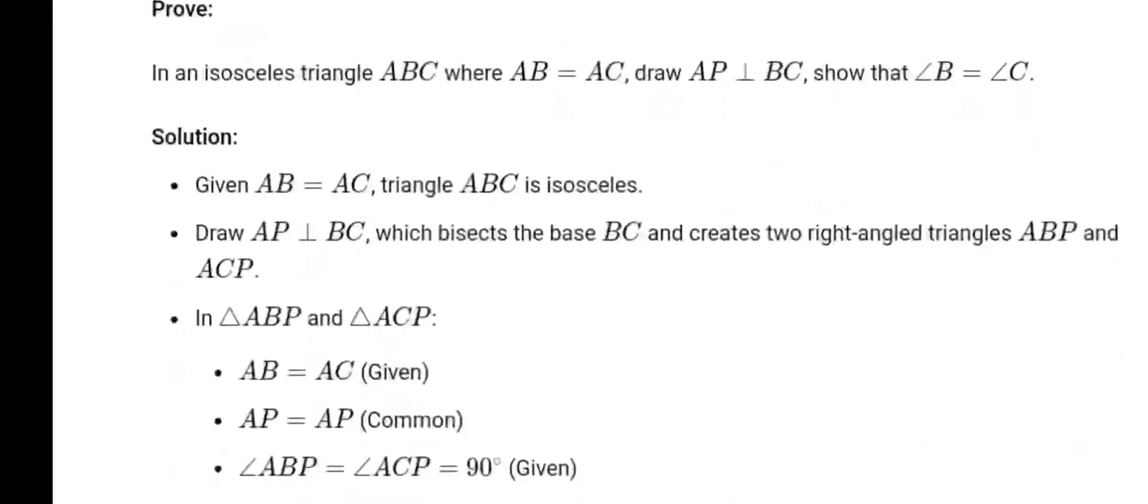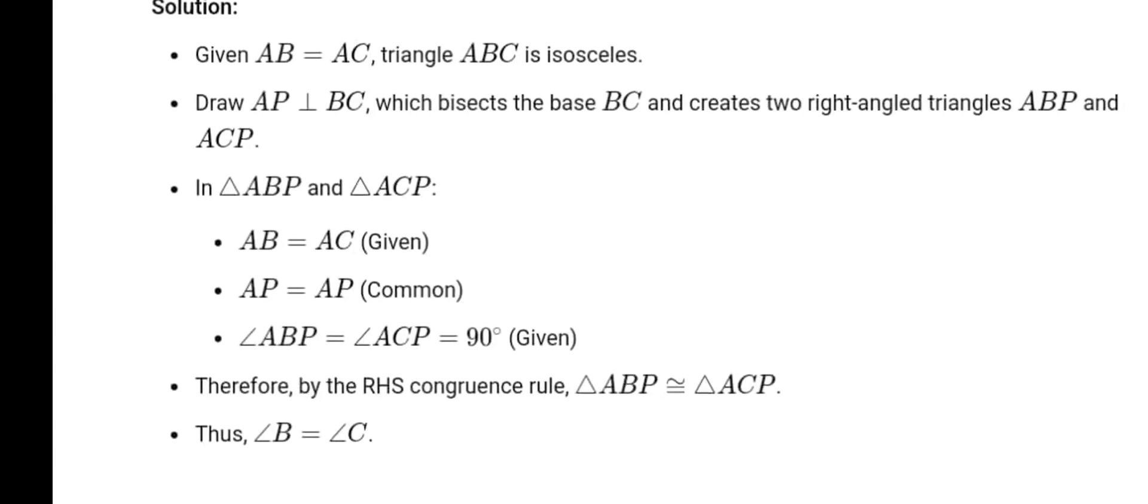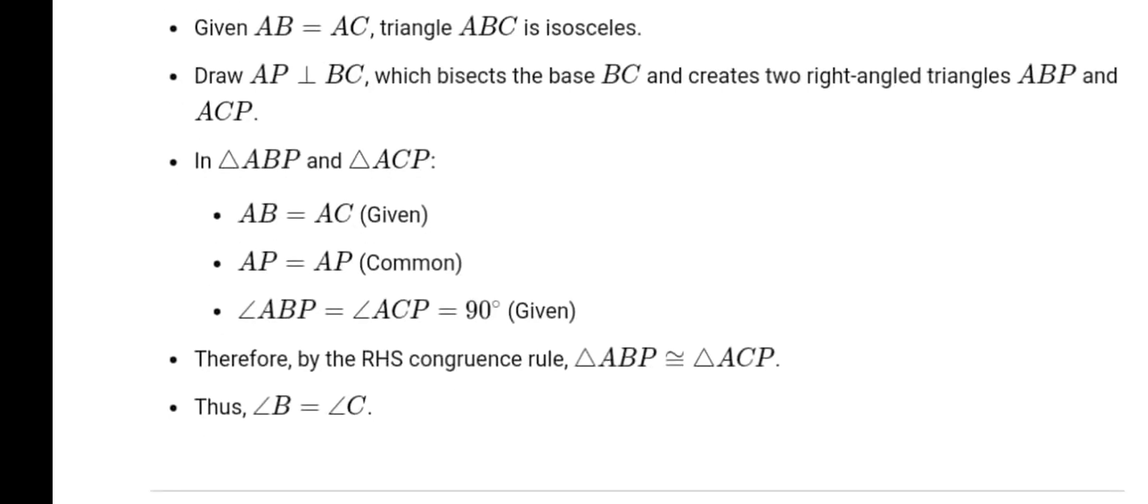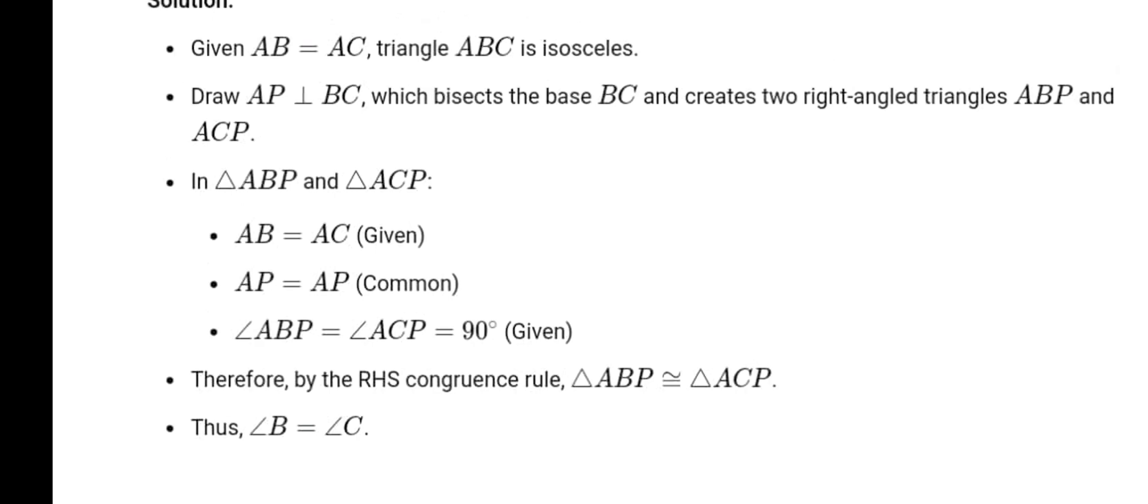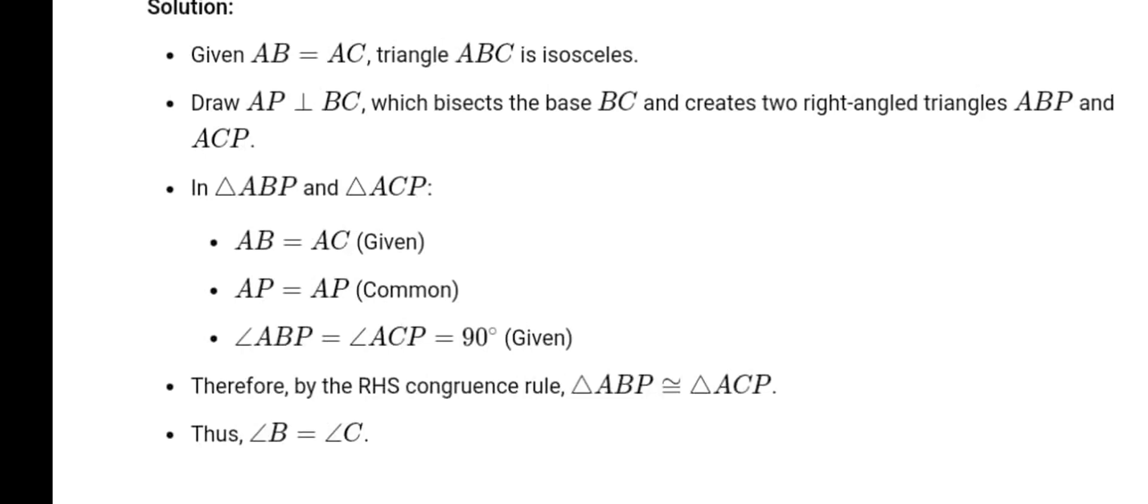Q.9 AB is a line segment and line L is the perpendicular bisector of it. If P is any point on L, show that P is equidistant from points A and B. Or, in an isosceles triangle ABC where AB equals AC, draw AP perpendicular to BC, show that angle B equals angle C.